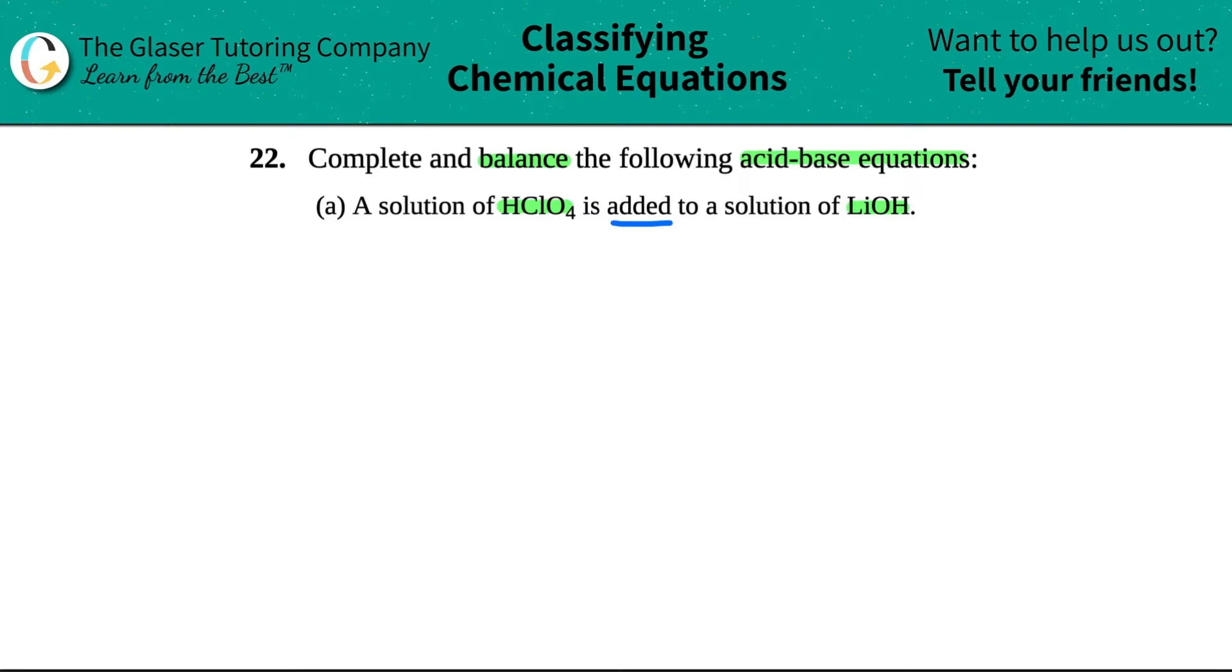Okay, so they told us that we're dealing with an acid-base reaction, right? So one of these guys has to be the acid, and the other one has to be the base. Remember in general that you can never have two acids or two bases reacting with each other. So one has to be technically the acid, and the other one has to be the base. The acid generally is the one that has the H in front, and the base generally is the one that has the OH.